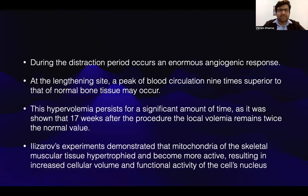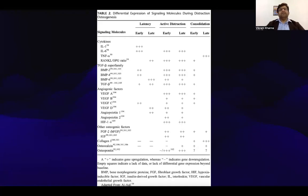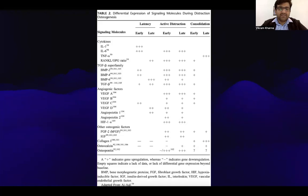Ilizarov's experiments demonstrated that mitochondria of the skeletal muscle tissue hypertrophied and became more active, resulting in increased cellular volume and functional activity of the cell's nucleus. The differential expression of signaling molecules during the various phases of distraction osteogenesis shows that during the initial latency and active distraction phase, inflammatory markers, BMP markers, and angiogenic markers are increased. In the consolidation phase, osteogenic factors suddenly increase whereas inflammatory and angiogenic markers go on a downtrend.